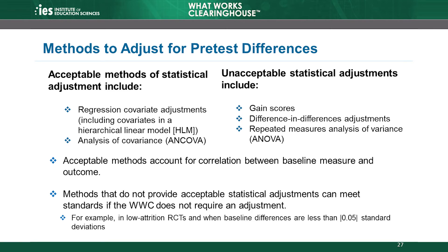What statistical adjustments does the WWC consider appropriate? Without getting into any technical details of statistical adjustment methods, acceptable methods of statistical adjustment include a regression covariate adjustment, including a hierarchical linear model, or analysis of covariance, ANCOVA. Both are acceptable adjustments.